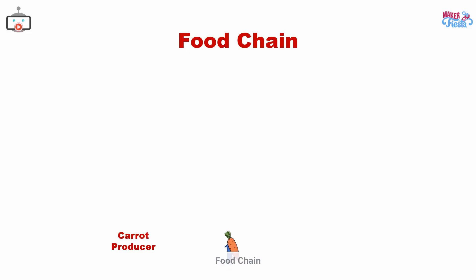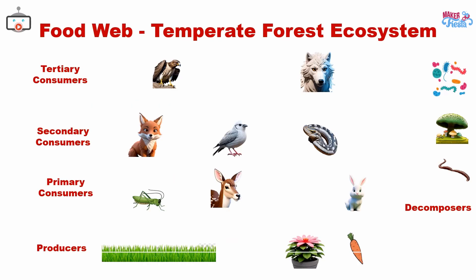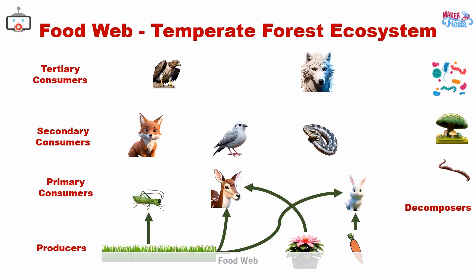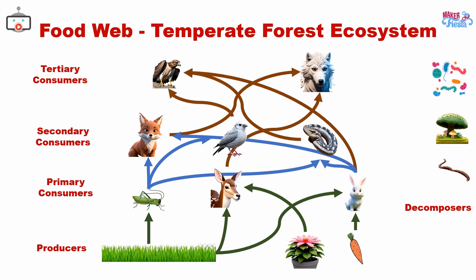Food chains provide a simple representation of feeding relationships, but they do not capture the complexity of real ecosystems. That's where food webs come in. A food web is a network of interconnected food chains. It shows the feeding relationships between all organisms in an ecosystem and how energy and nutrients flow through the ecosystem.